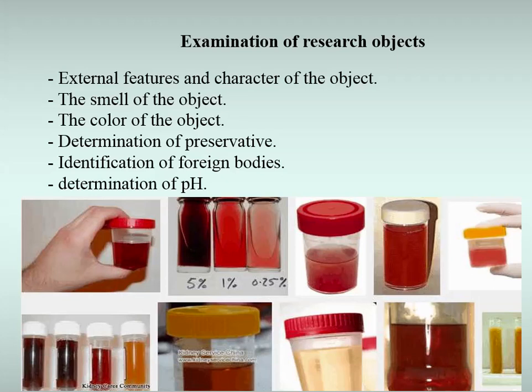For identification of foreign bodies, incoming research objects are examined very carefully, first with the naked eye, then with a magnifying glass, and then with a microscope. Some foreign bodies and impurities can be found in the object of research, such as arsenic trioxide-specific porcelain granules or sediments. For the study of extracted seeds, plant and fungal particles, as well as other foreign bodies of plant origin, expert advice is needed, and if necessary, these objects are studied by pharmacognosy.